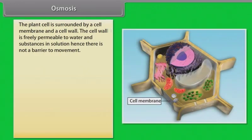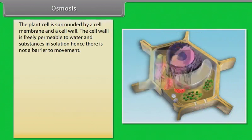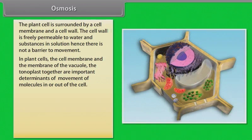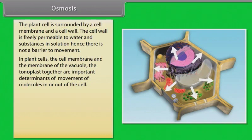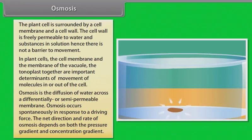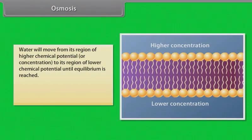The plant cell is surrounded by a cell membrane and a cell wall. The cell wall is freely permeable to water and substances in solution, hence it is not a barrier to movement. In plant cells, the cell membrane and the membrane of the vacuole — the tonoplast — together are important determinants of movement of molecules in or out of the cell. Osmosis is the term used to refer specifically to the diffusion of water across a differentially or semi-permeable membrane. Osmosis occurs spontaneously in response to a driving force; the net direction and rate of osmosis depends on both the pressure gradient and concentration gradient. Water will move from its region of higher chemical potential to its region of lower chemical potential until equilibrium is reached.